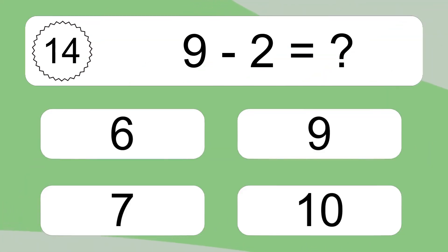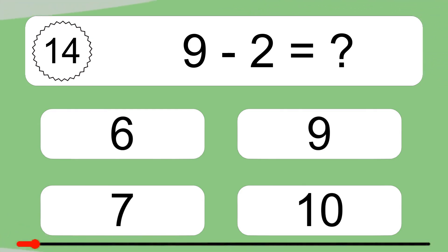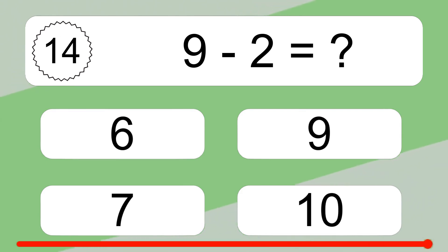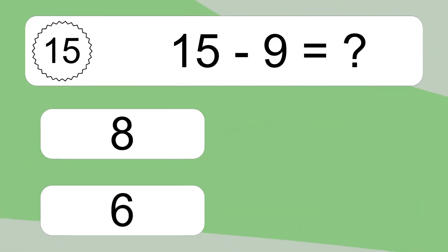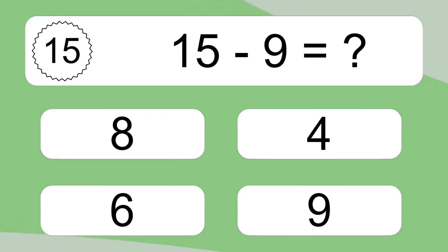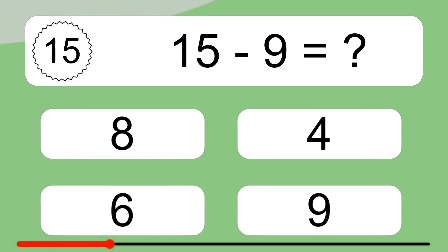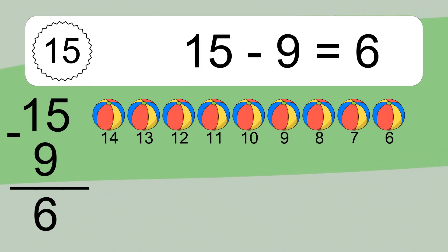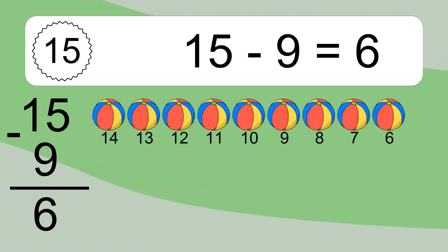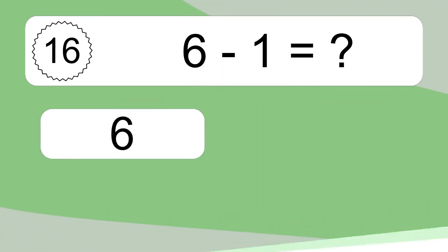9 minus 2 equals what? 9 minus 2 equals 7. Let's count it: 8, 7. 15 minus 9 equals what? 15 minus 9 equals 6. Let's count it: 14, 13, 12, 11, 10, 9, 8, 7, 6.